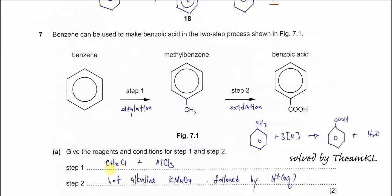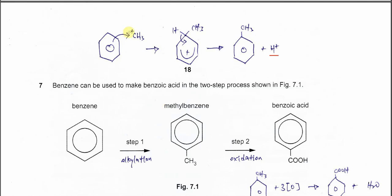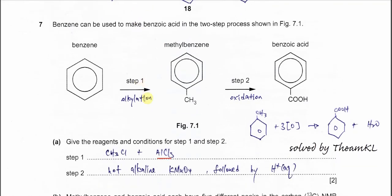To form this carbocation, we need to use chloromethane with the catalyst aluminum chloride (AlCl3). When these two react, they will form the carbocation needed. Therefore, the reagents and conditions for step one are chloromethane and AlCl3.